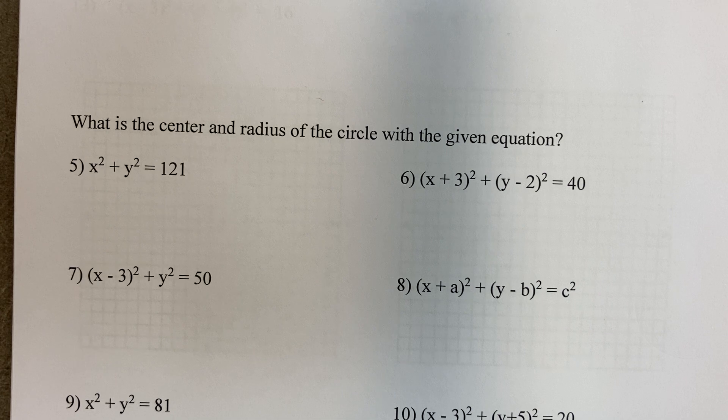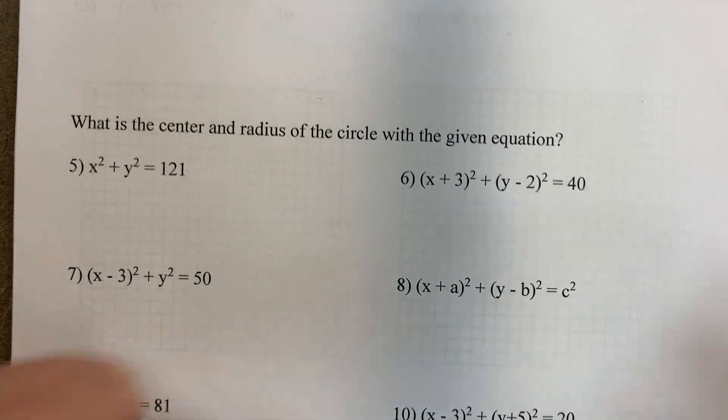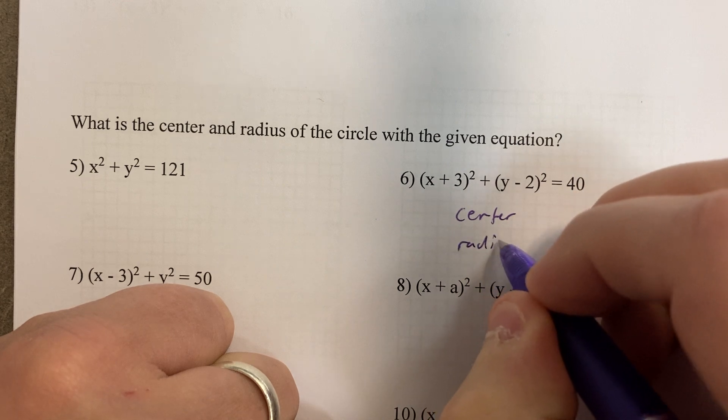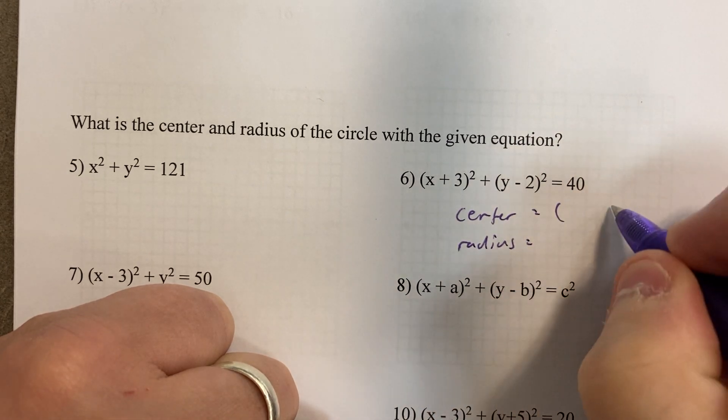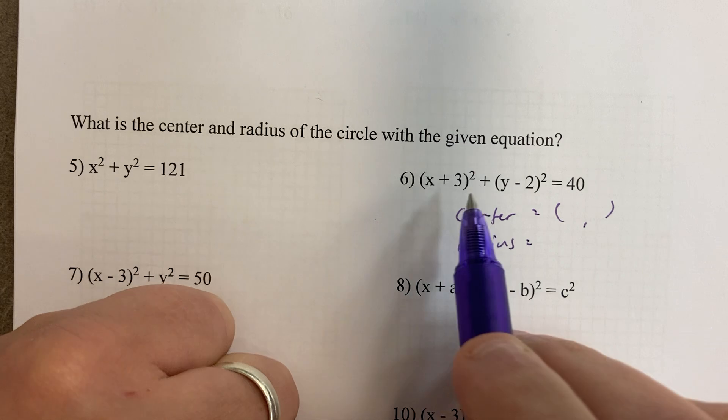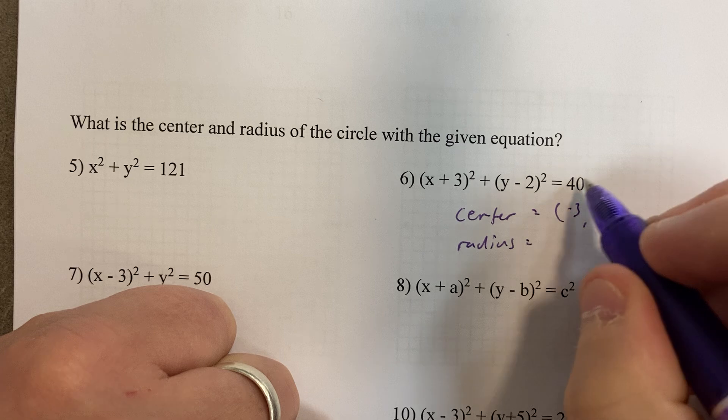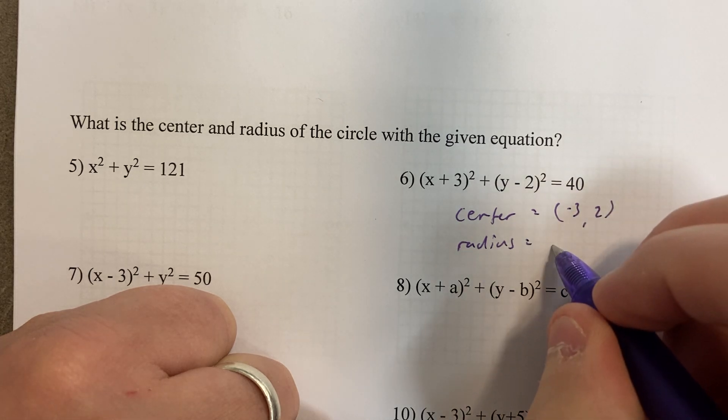Okay, let's go down here. What is the center and radius of the circle? Let's see. The center is going to be (-3, 2), and the radius is the square root of 40.